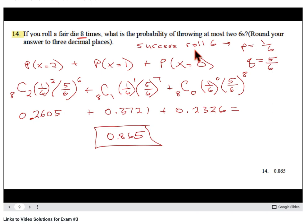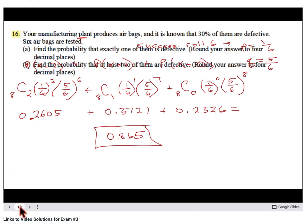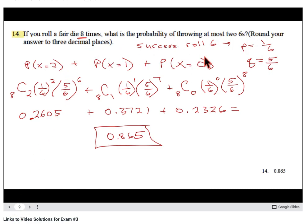Now, had they said two or more, or more than two, we would have had to do three, four, five, six, seven, eight. We would have had too many. So another process is we could find what we don't want and subtract it from one. One minus what we don't want would give it to us. That would have been more calculations - probability of three, four, five, six, seven, eight. Could have calculated all those, added them together, subtracted from one.